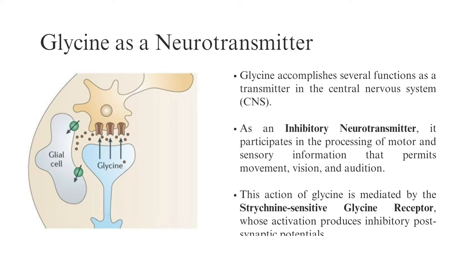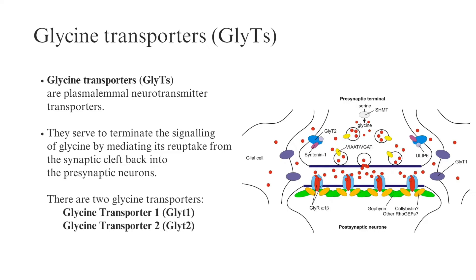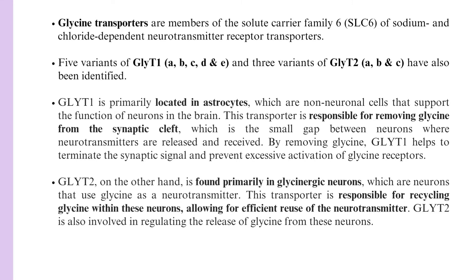Glycine Transporters are plasmalemmal neurotransmitter transporters. They serve to terminate the signaling of glycine by mediating its reuptake from the synaptic cleft back into the presynaptic neurons. There are two glycine transporters: Glycine Transporter 1 and Glycine Transporter 2. They are members of the solute carrier family 6 of sodium and chloride-dependent neurotransmitter transporters.